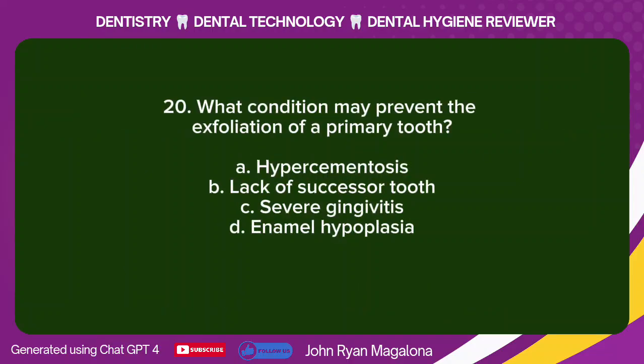Question 20: What condition may prevent the exfoliation of a primary tooth? A. Hypercementosis. B. Lack of successor tooth. C. Severe gingivitis. D. Enamel hypoplasia. Answer: B. Lack of successor tooth.